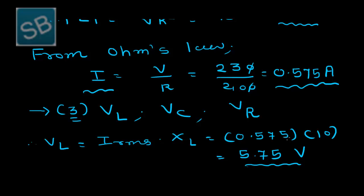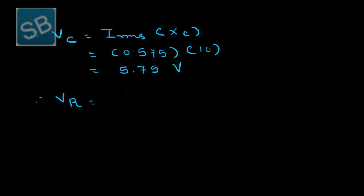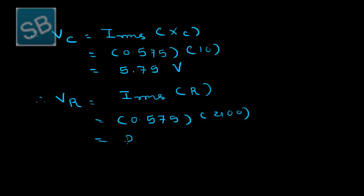Similarly, for the capacitor: VC equals IRMS into XC, that is 0.575 into 10, so VL equals VC equals 5.75 volts. The voltage across R equals IRMS into R, that is 0.575 into 400, which equals 230 volts — equal to the source voltage already given in the problem.